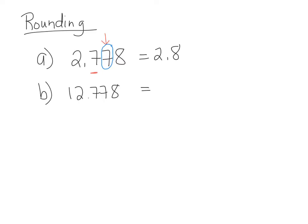In the next example, rounding to the nearest tenths — the number we're examining is 2. Because that number is less than 5, we leave the previous number as it is, so you're rounding down. If the number were 1.8778 and we were rounding to the tenths, since the digit after is greater than 5, the answer would be rounded up to 20.